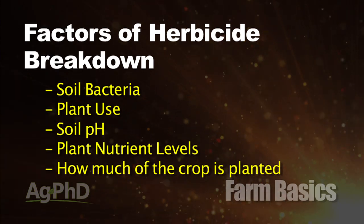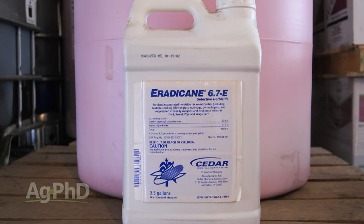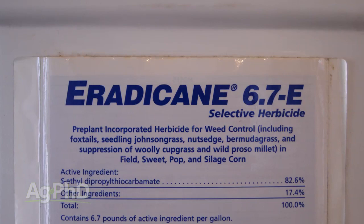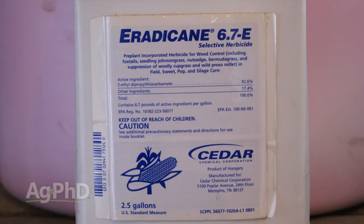There's something else with the bacteria as well. There are certain herbicides, like the old eraticane that we used 30 years ago — if you used that in the soil one time, the bacteria that broke down the eraticane would start to build up. So it would tell you right on the label not to use it in back-to-back years, because there would be so many of those bacteria around. We always used to say don't use it more than once out of five years, because there would be enough bacteria that, literally, they could break it all down in one week if you get enough of them.